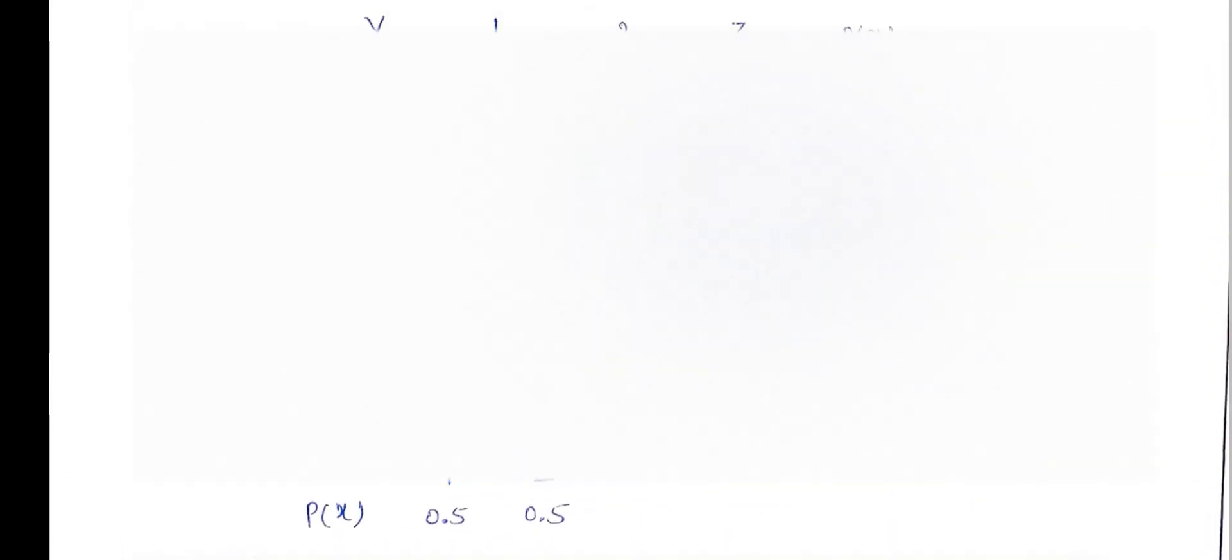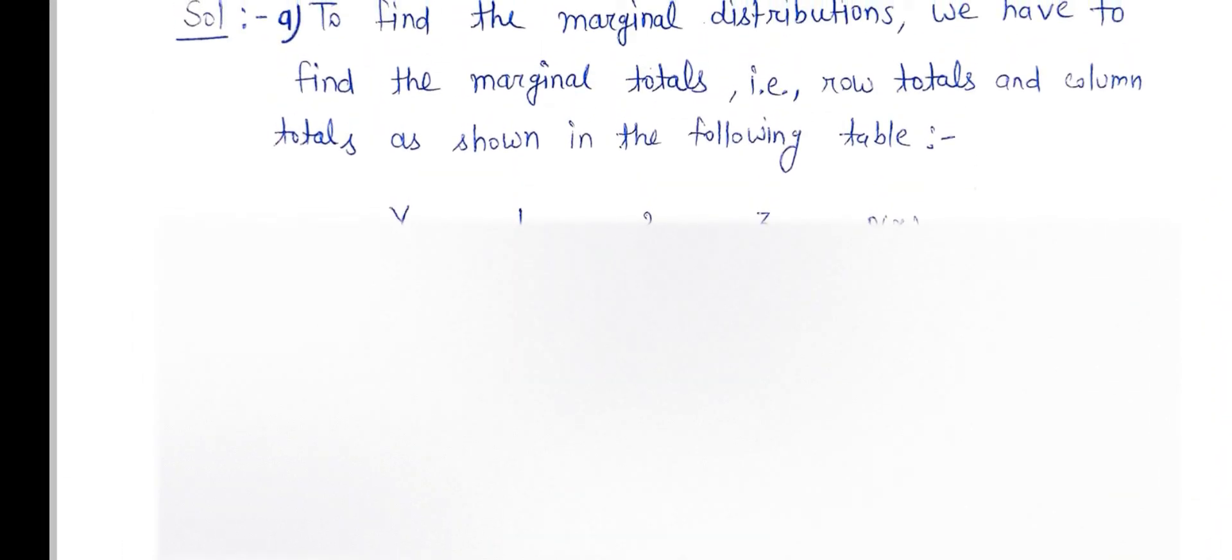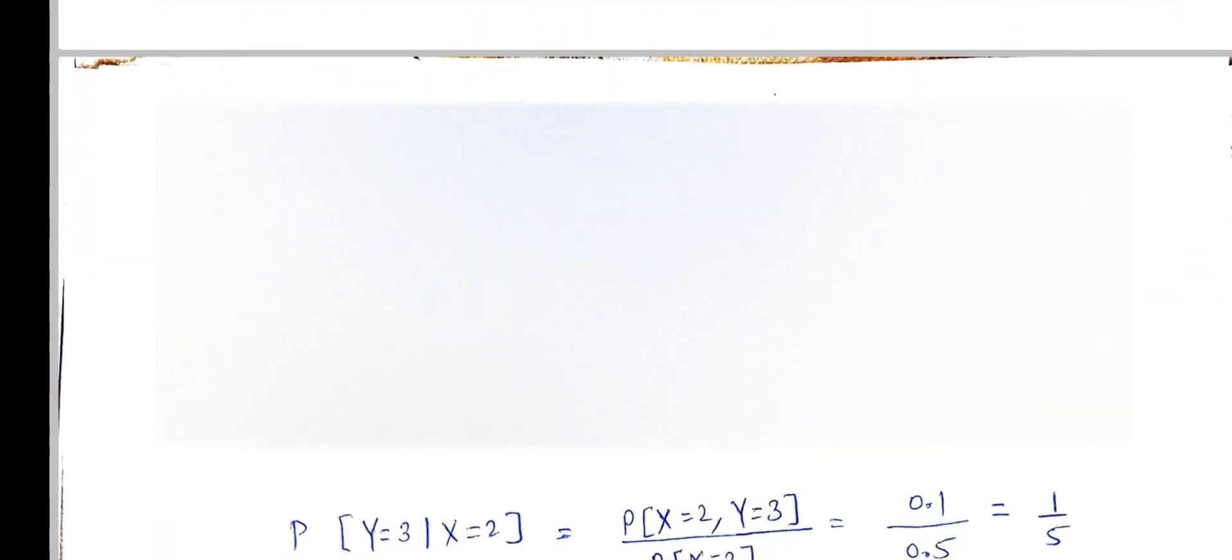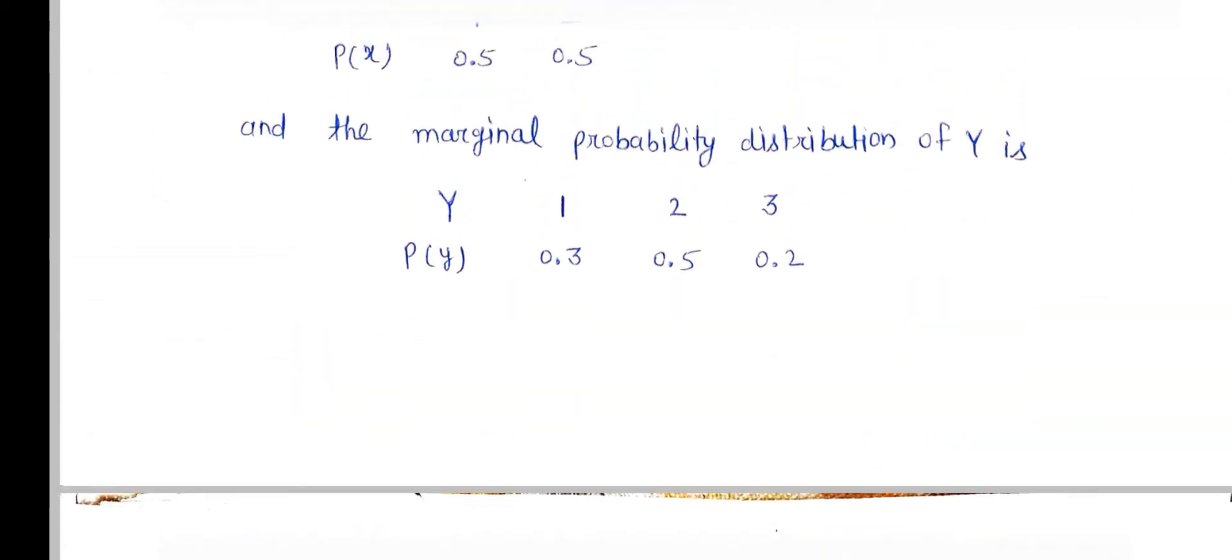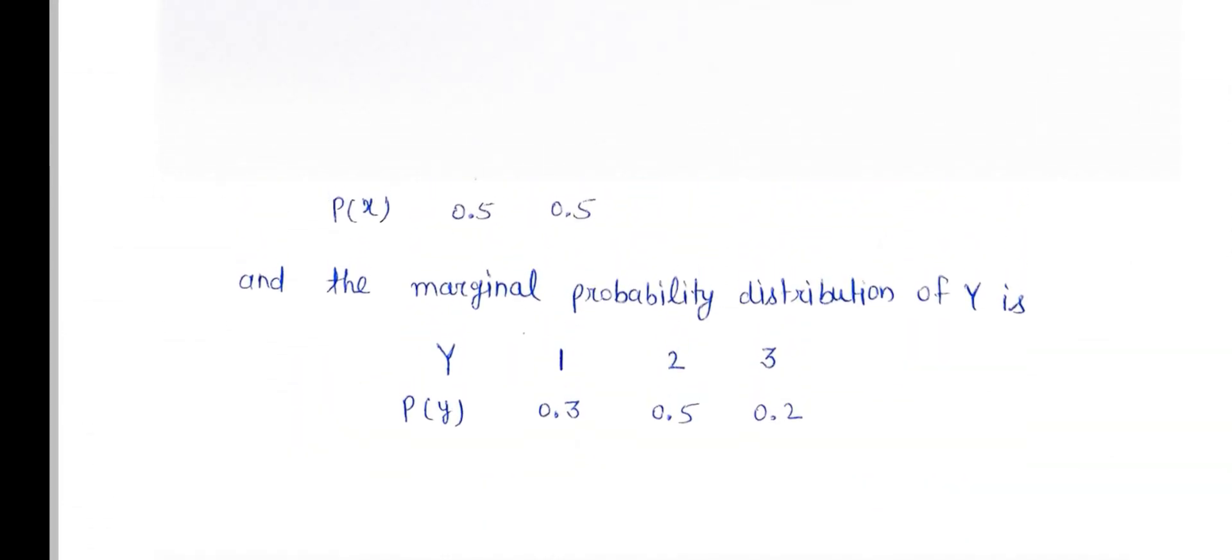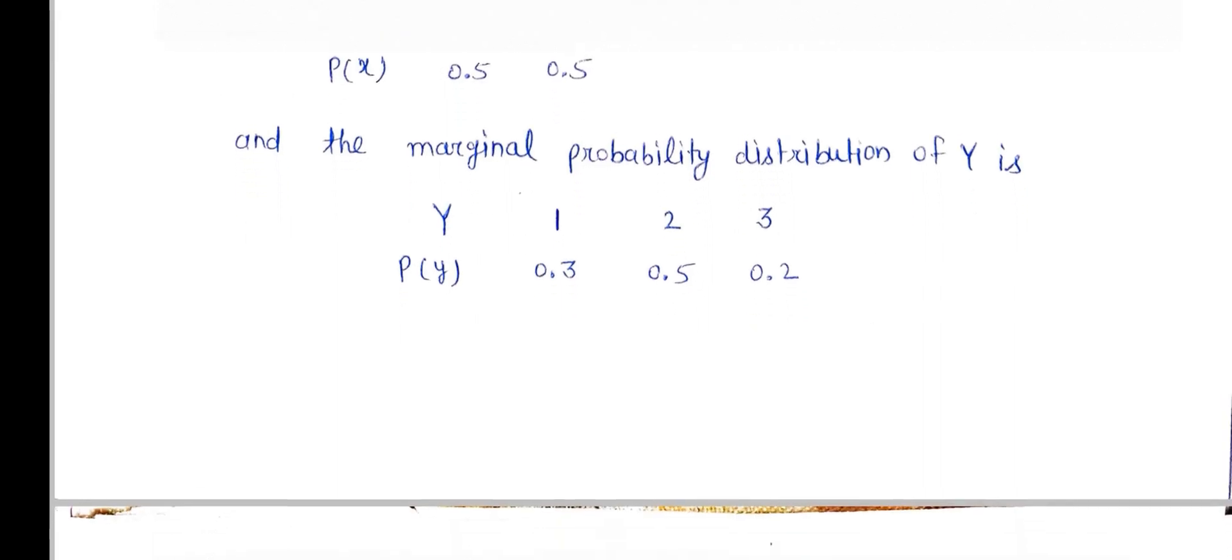So, X equals 2 and Y equals 1 means 0.1. And X equals 2 is the marginal probability, which is 0.5.